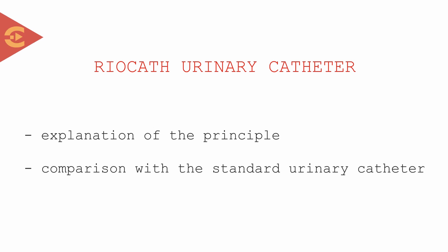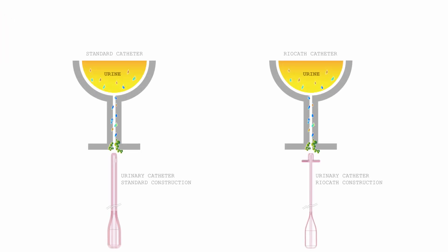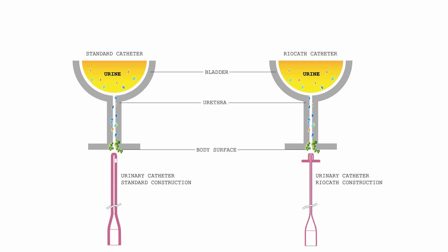In this animation we will explain the principle of the new Ryocath urinary catheter and how it is different from the currently available catheters. Here we see the pictures of two urinary bladders. Notice that microbes are always present in the initial portion of the urethra, which can cause infections if they are taken deep inside the urethra or even worse inside the urinary bladder.